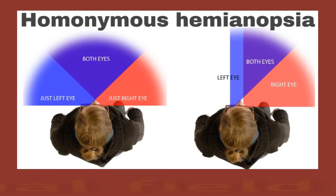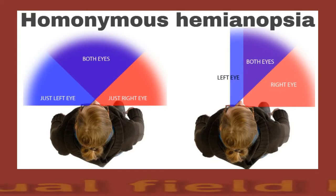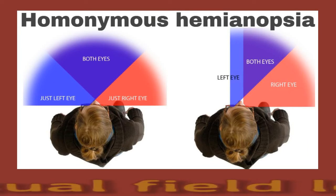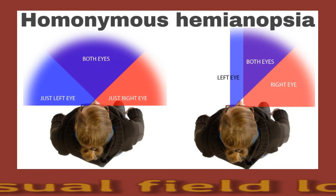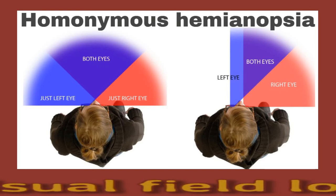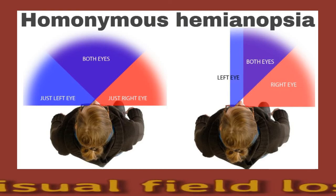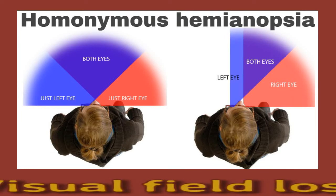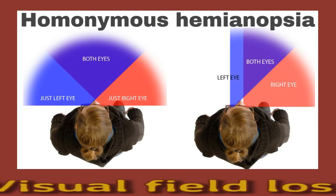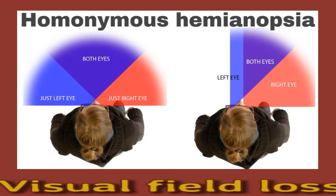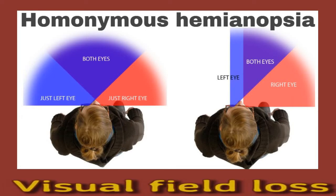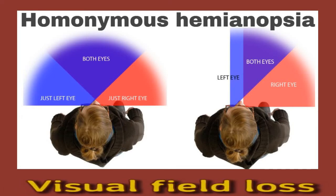Types of vision problems after stroke: In some cases, vision changes may be temporary or improve with training; however, other vision changes may be permanent. A person may experience various types of vision problems after a stroke. Visual field loss: the visual field is everything a person can see when they focus their eyes on a particular point.